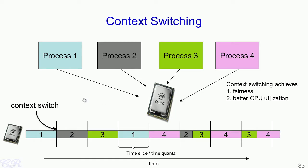In a multitasking-enabled operating system, the OS allows one process to execute for some time and then there is a context switch. During this context switch, process 1 is stopped and a new process, in this case process 2, begins to execute. The operating system ensures that when process 1 stops executing, its state is saved so that it can be scheduled back into the CPU and continue executing from where it had stopped. As a result, processes execute for brief intervals of time known as time slices.